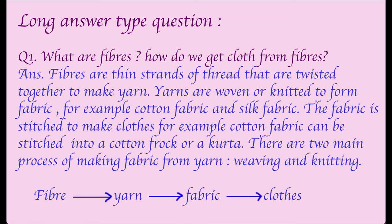Long answer type questions. Question one: What are fibers? How do we get clothes from fibers? Fibers are thin strands of threads that are twisted together to make yarn. Yarns are woven or knitted to form fabric, for example cotton fabric and silk fabric. The fabric is then stitched to make clothes, such as a cotton frock or a kurta.